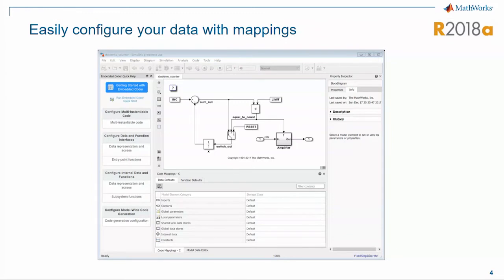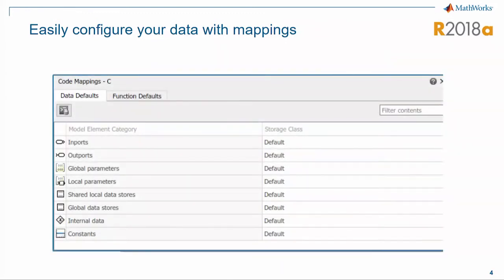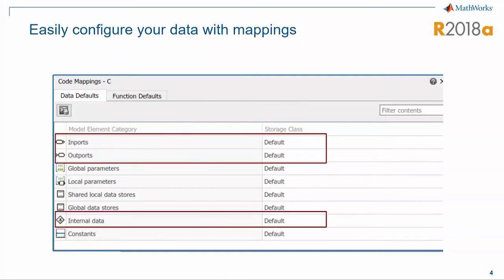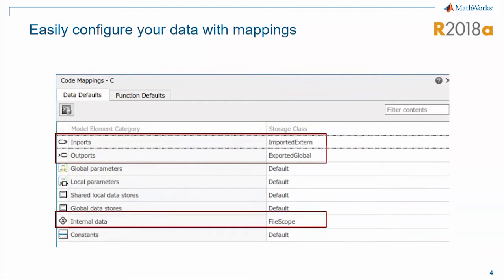In 18a, we've added something called the code mappings panel. We've added a spreadsheet with various types of modeling elements, and you can apply a storage class to classes of data instead of specific pieces in your model. Focusing on inports, outports, and internal data — if a user wanted to import their inports, export their outports, and make their internal data file scope, all they need to do is use these simple dropdowns and set their storage classes.